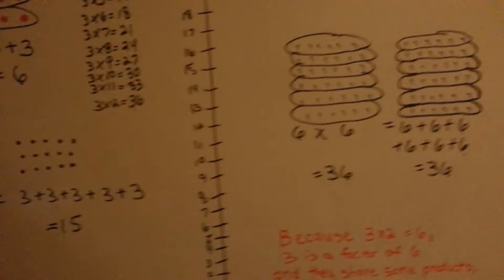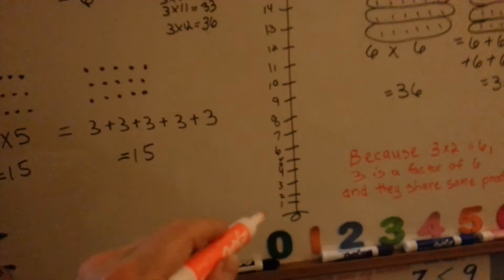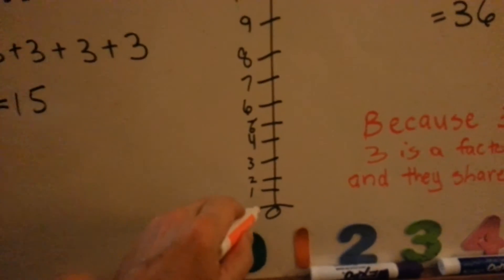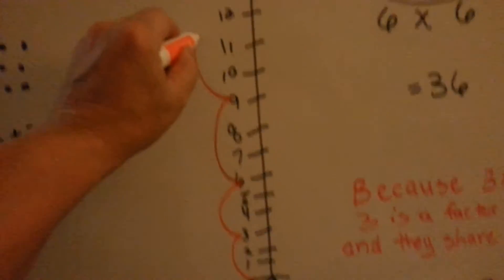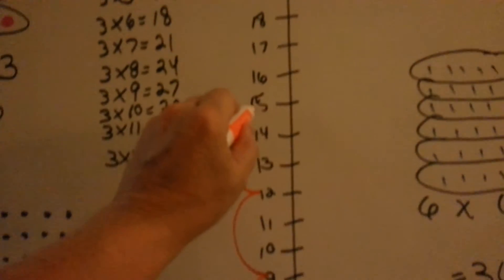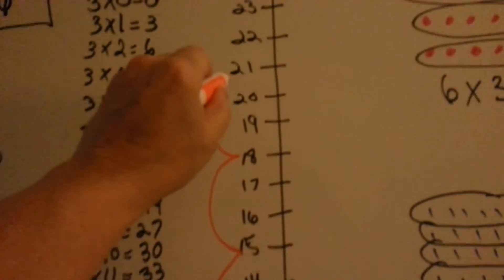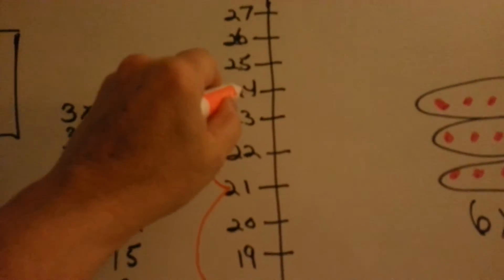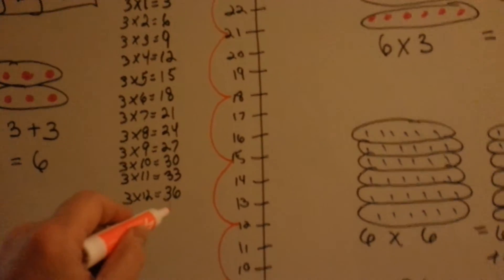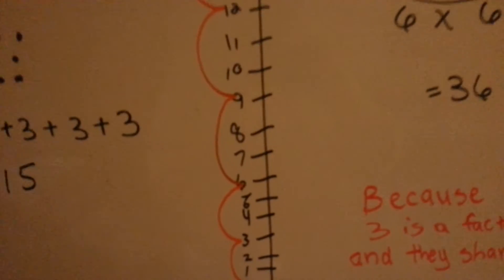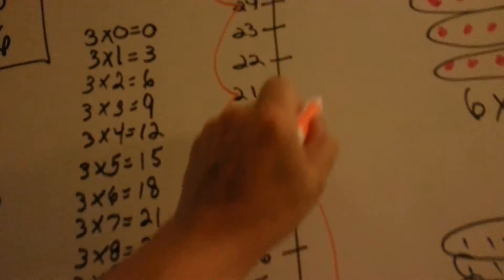Now, what happens when we skip count them on a number line? Let's do the 3's: 3, 6, 9, 12, 15, 18, 21, 24, 27. Those are the answers in the 3 times table. But when we do it by 6's, we jump to 6, 12, 18, 24, and then the next one would be 30.